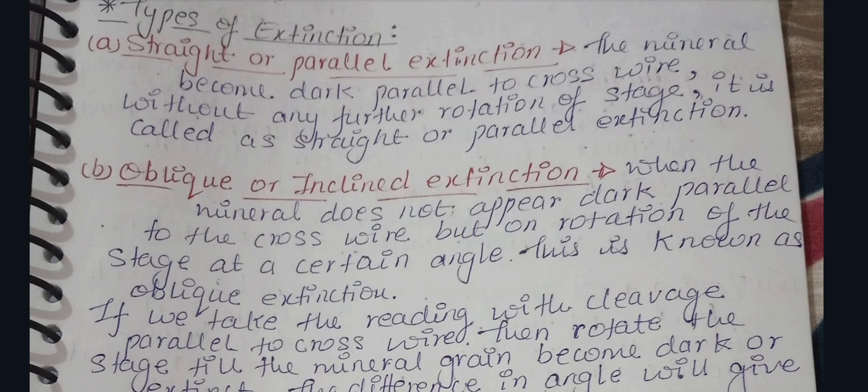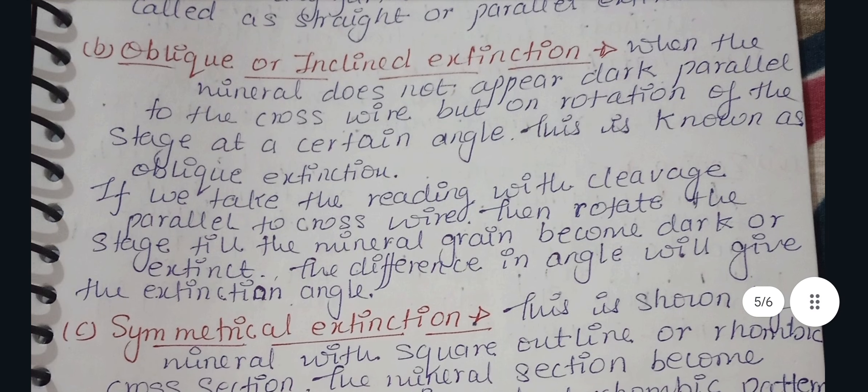The second type is oblique or inclined extension. This is the opposite of straight extension. When the mineral does not appear dark parallel to the cross wire, but on rotation of the stage at a certain angle it becomes dark, this is known as oblique extension. So it will not appear dark when parallel to the cross wire.